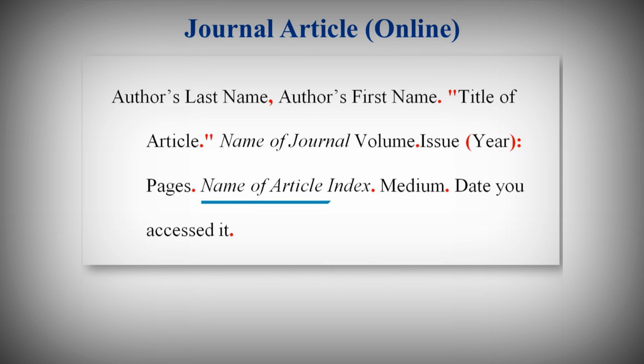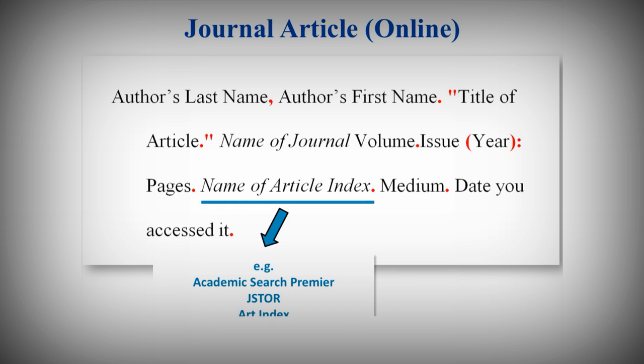If you access the article through the library in one of our article indexes — such as Academic Search Premier, JSTOR, Art Index, or MLA International Bibliography — then you would enter it here in italics. Sometimes you may be using an article you found in an open access journal, available for free on the internet. If you didn't access it through an article index, simply skip that step.